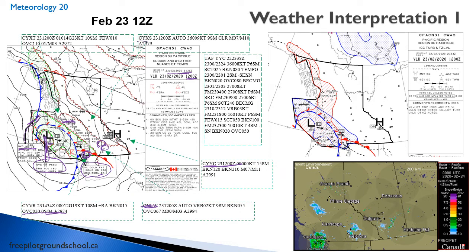Going north, Prince George is in central BC. They're calling clear weather and the GFA forecasts bases at 12,000, tops at 20,000. Something interesting here — because this is an auto station, it comes back as CLR instead of SKC. When you see SKC, the actual sky is clear. CLR means the auto station doesn't detect any ceiling, so there could still be a ceiling way high up but it won't detect anything.